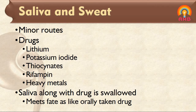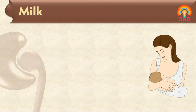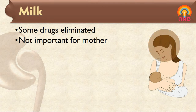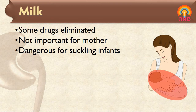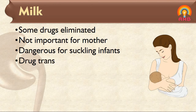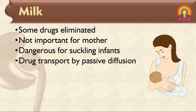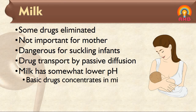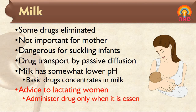The last route of elimination is milk. Some drugs are excreted through breast milk. It will not play any important role in the mother but it is dangerous for the suckling infant as the infant receives the drug in high concentration. Most drugs enter breast milk by passive diffusion. Milk has a somewhat lower pH than plasma and hence basic drugs are more concentrated in milk. It is advisable to administer any drug to a lactating woman only when it is essential, and mostly drugs should be avoided.